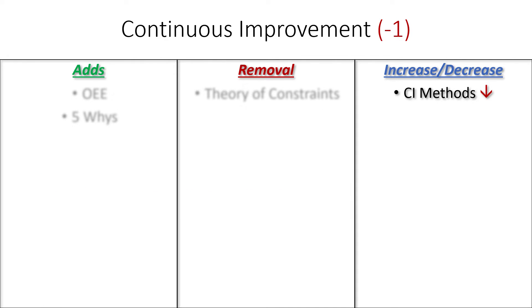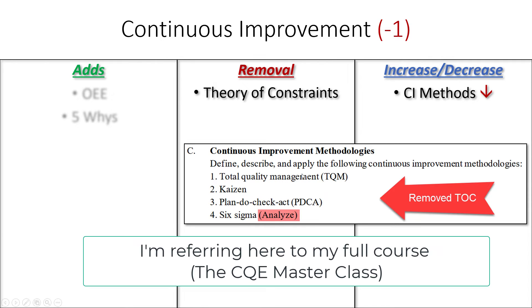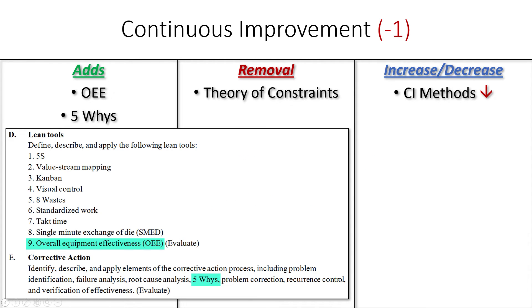In continuous improvement, they reduced the cognition level for continuous improvement methods from evaluate down to analyze. They also removed the theory of constraints — I'll leave that lecture in the course until the body of knowledge changes, but if your exam is after October you can skip it. For additions, I really like these: they're adding five whys, which is already in the course as a bonus lecture, and OEE. I'm a huge fan of OEE — the OEE of your equipment is a reflection of the health, robustness, and quality of that equipment, so I think it's an important concept that quality engineers should absolutely understand.